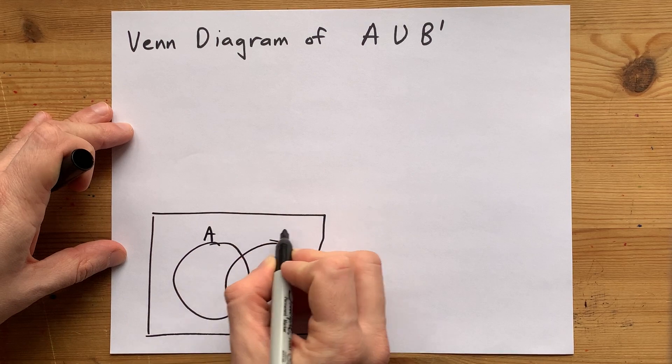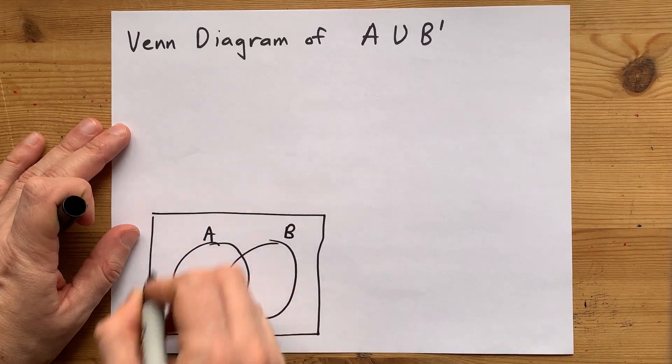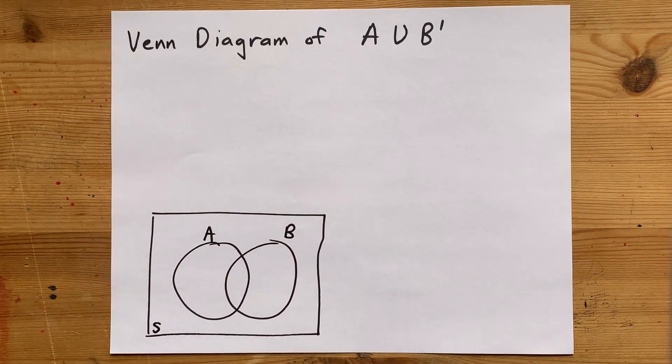Especially when I break it down into English. I have my two sections, A and B, here. I'm going to label the outside S for sample space, although your teacher might use U for universe.